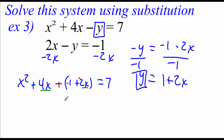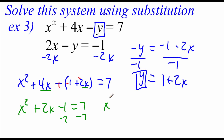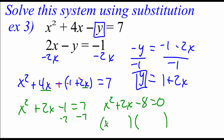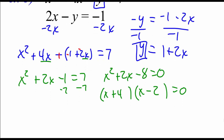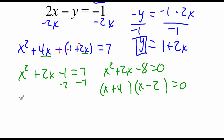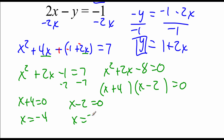Distributing the negative and combining like terms — 4x minus 2x gives x squared plus 2x minus 1 equals 7. This is a quadratic with an x squared, so we need a 0 on one side. Subtracting 7 gives x squared plus 2x minus 8 equals 0. Factoring: (x plus 4)(x minus 2) equals 0. Setting each factor equal to 0: x plus 4 equals 0 gives x equals negative 4, and x minus 2 equals 0 gives x equals 2.